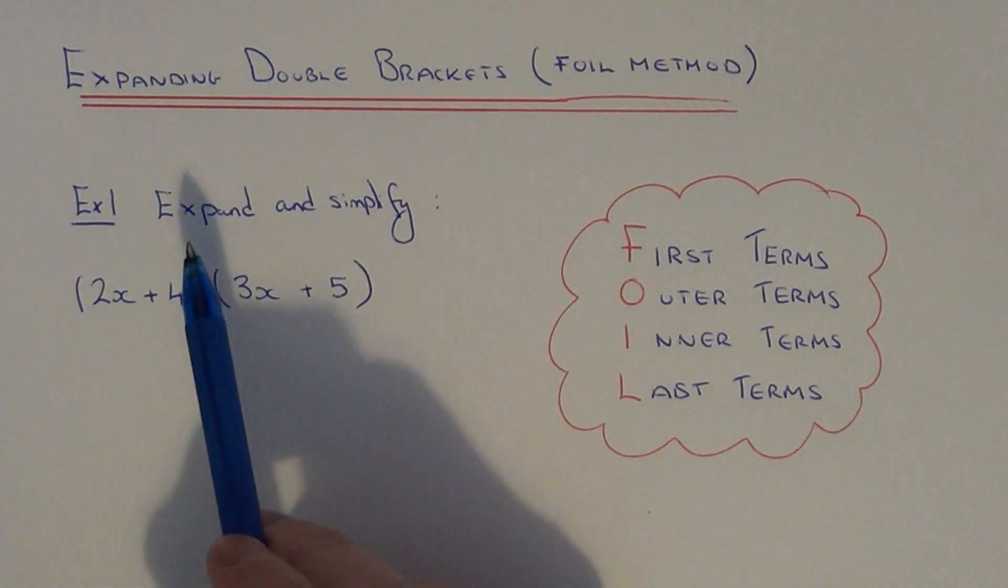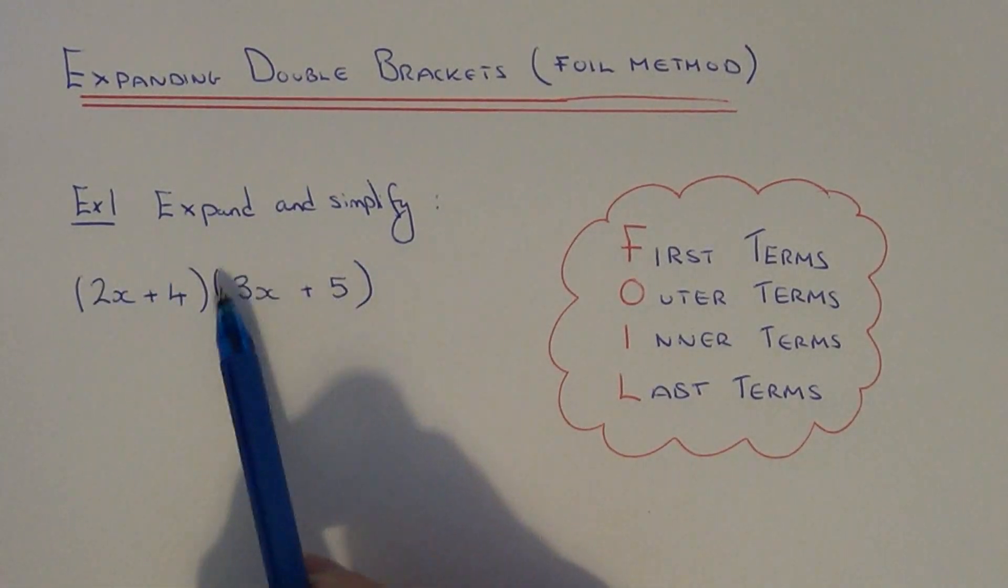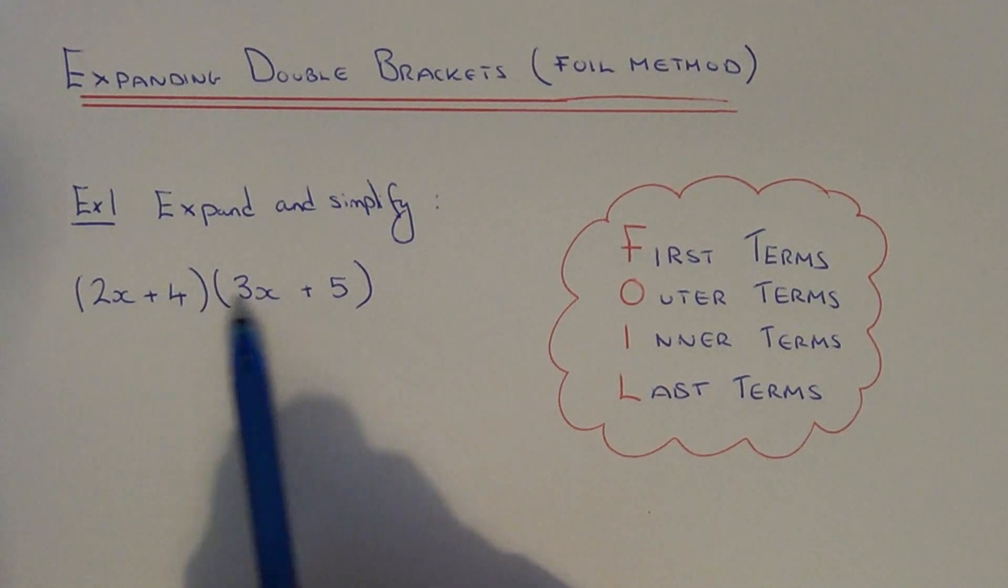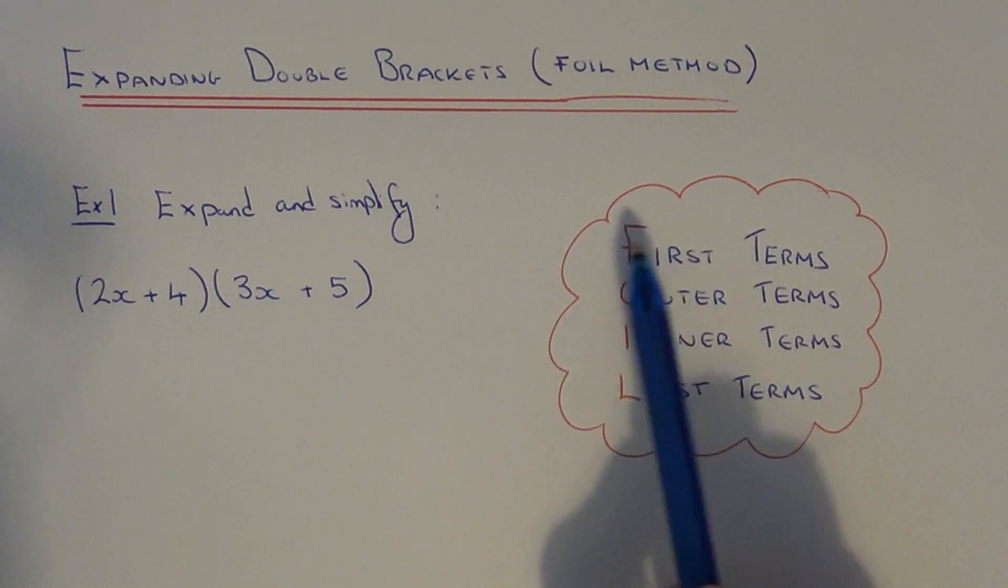Today I'm going to show you how to expand and simplify a pair of double brackets. This is when you have two brackets together. We're going to use the FOIL method.